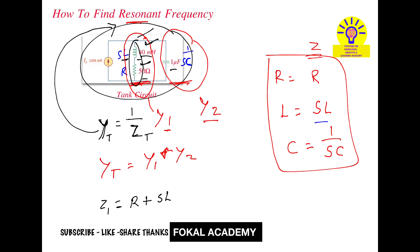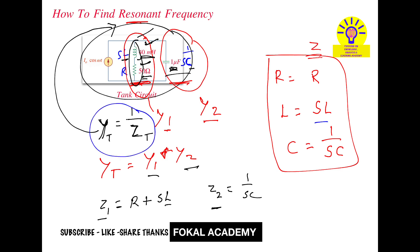The impedance of the second branch, Z2, is 1/SC, since it contains only the capacitor. The given component values are: C = 1 microfarad, L = 40 millihenry, and R = 50 ohms. We will substitute these values at the end. Now, Y1 = 1/Z1 and Y2 = 1/Z2.